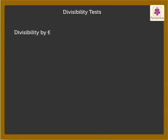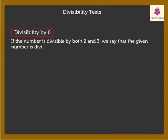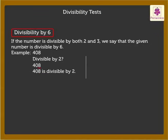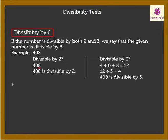Divisibility by 6: If the number is divisible by both 2 and 3, we say that the given number is divisible by 6. For example, look at the number 408. Is it divisible by 2? The number ends in 8. Thus, it is divisible by 2. Is it divisible by 3? 4 plus 0 plus 8 is equal to 12, which is divisible by 3, making 408 divisible by 3 as well. Hence, 408 is divisible by 6.